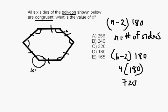So there's a total of 720 degrees inside of this polygon. And since there are 6 angles, we do 720 divided by 6, which gives us 120. So that means that each angle is 120.